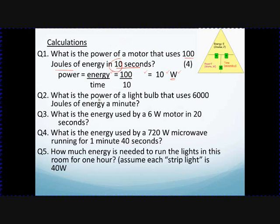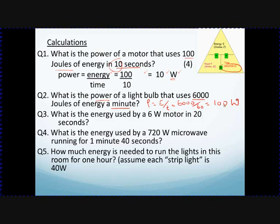Next example: find the power of a light bulb that uses 6000 joules in a minute. We still use power equals energy divided by time. The energy is 6000 joules and the time is one minute, but time must be in seconds, so that's 60 seconds. 6000 divided by 60 equals 100 watts — that's 100 joules every second.